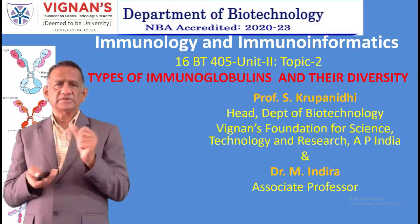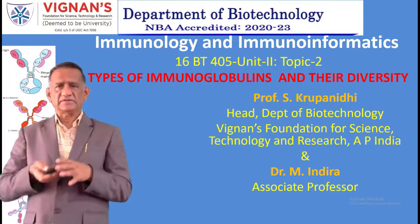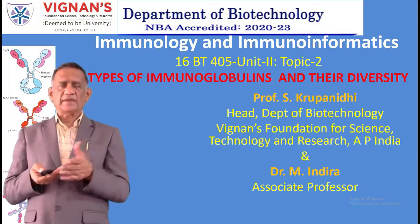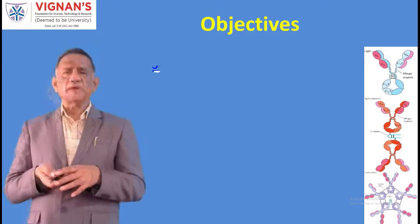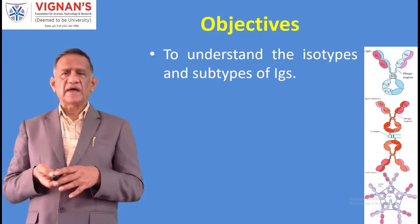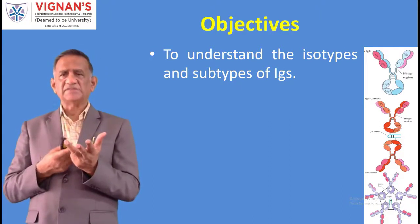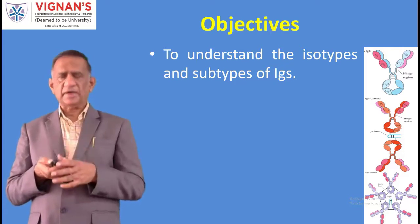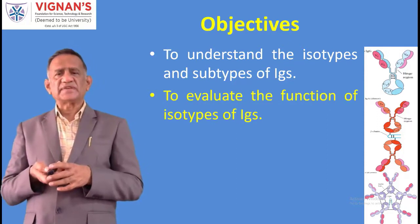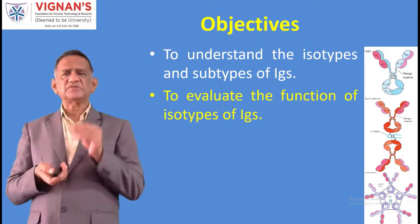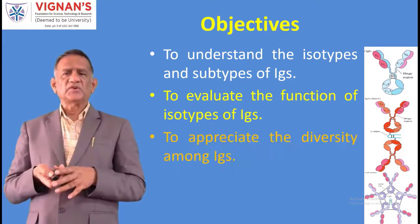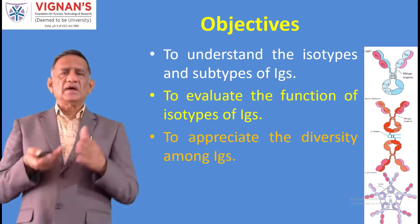In the previous lecture we saw how the structure is analyzed using papain and pepsin through partial proteolysis. Now we look at the types of immunoglobulins. The objectives are: to understand the isotypes and subtypes of immunoglobulins - IgG, IgD, IgA, IgM, IgE - and to evaluate the function of each isotype, since each immunoglobulin has a specific function.